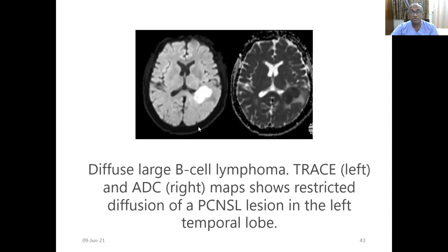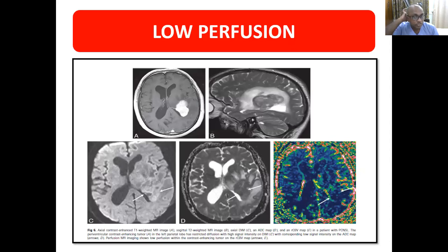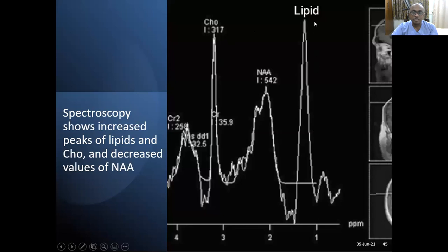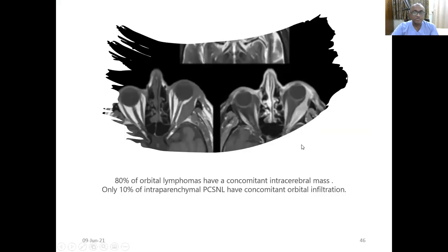On perfusion scan, there is low perfusion or only slight increase — not more than high grade gliomas. The enhancing lesion shows relatively low blood volume. On MRS, you will definitely see a choline peak, and if you are lucky you will also get a lipid peak. So choline peak and lipid peak are the key spectroscopy findings.